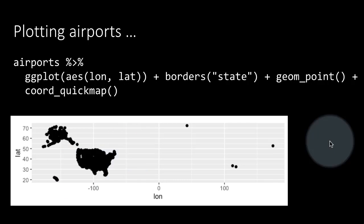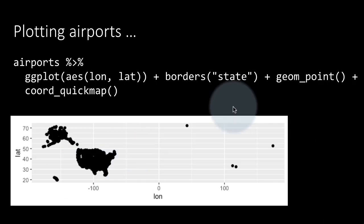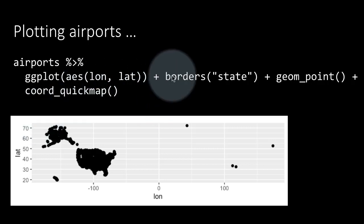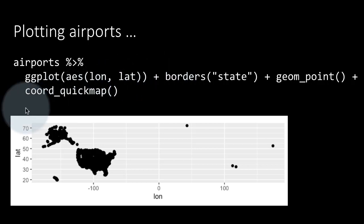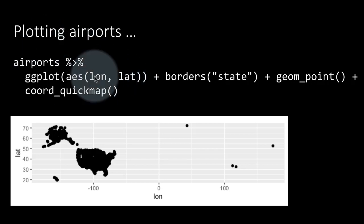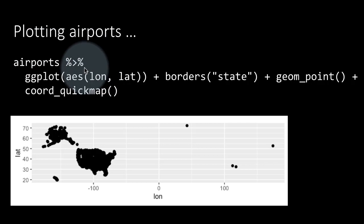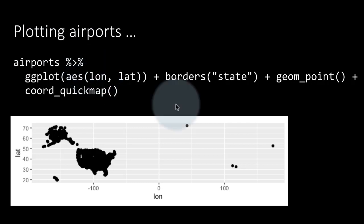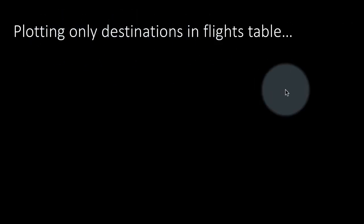To do that, we might want to filter out all the airports that actually occur as destinations in the flights table. After all, the flights table contains information mostly about commercial flights carrying passengers, non-military flights and so on. And therefore, we might want to filter the airports list only by destinations that are in the flights table. So we might want to plot only the destinations which are in the flights table.